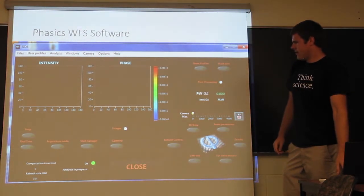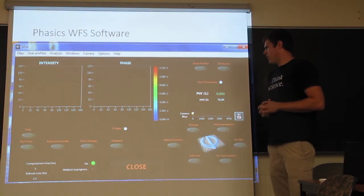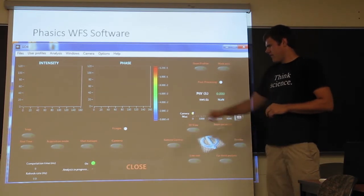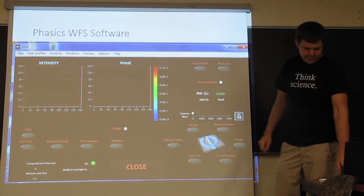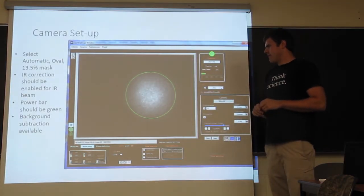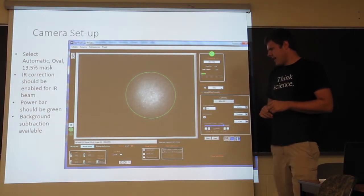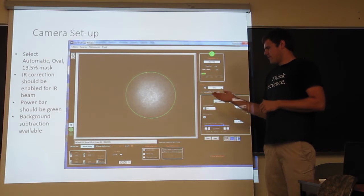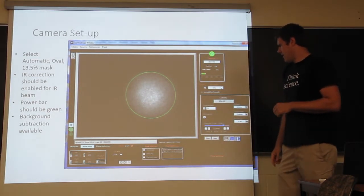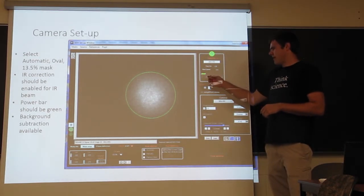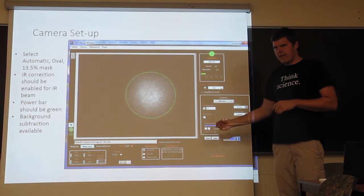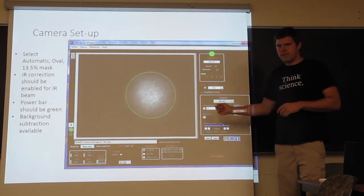So here's the main window for the Phasix software. There's calculation windows that you can open up here, and over here is how to set up acquisition. So first you need to click on the camera window, and this opens up the raw CCD image. Again, you need to select the analysis pupil, so for this one, you select an oval pupil with a 13% clip, and then you need to make sure the power's high enough, so it needs to be between 200 and 250, and you can change the exposure to help you do that. And again, you can adjust image averages if you want to increase your accuracy.